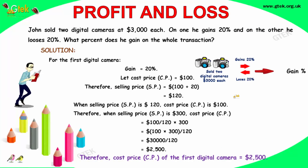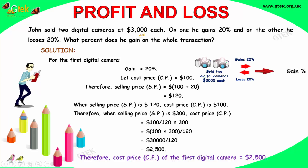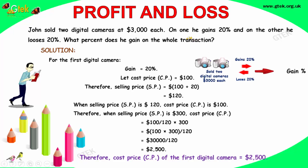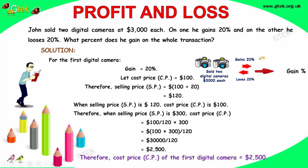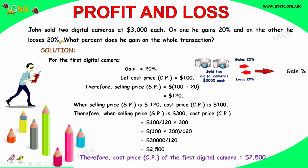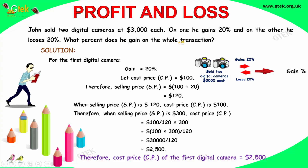Let's go with a problem — the first problem in profit and loss. John sold 2 digital cameras at 3000 each. On one he gains 20%, and on the other he loses 20%. What percent does he gain on the whole transaction? So whether he gains or not, and how much is the percentage?